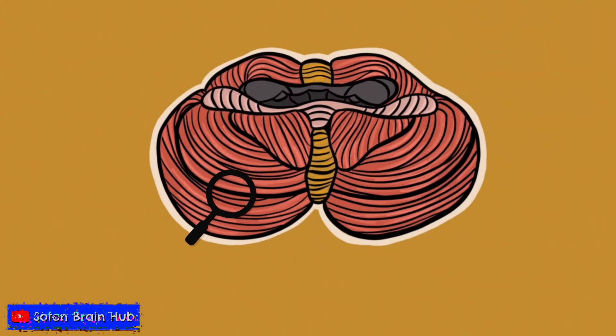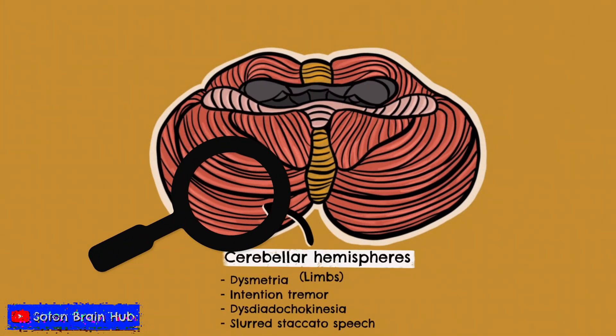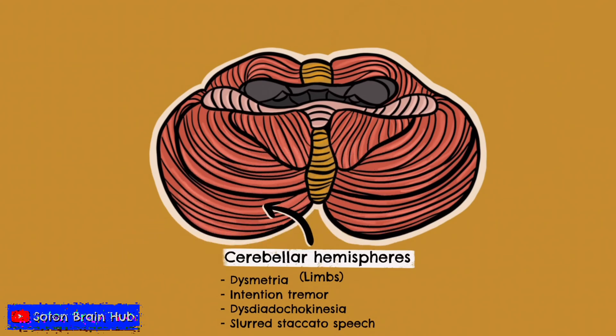Firstly, let's consider the symptoms if the cerebellar hemispheres are damaged. The hemispheres are primarily concerned with the control of the limbs. Therefore, damage to the hemispheres most commonly results in dysmetria — which, if you remember, is imprecision of movements — and in this case, the movements of the limbs.